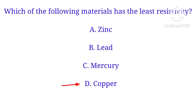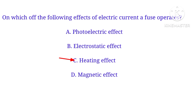Which of the following materials has the least resistivity? Among zinc, light, mercury, and copper — the correct answer is copper. Copper has the least resistivity.